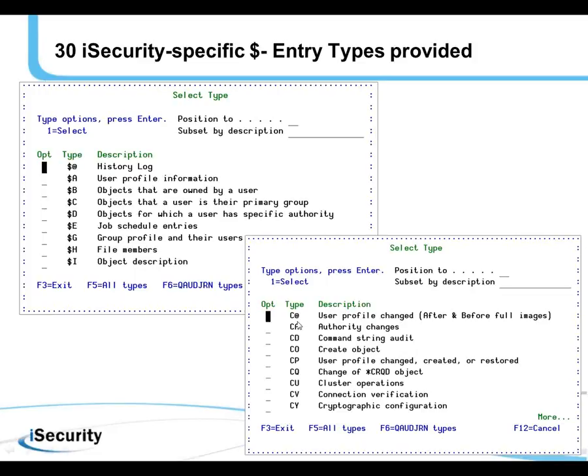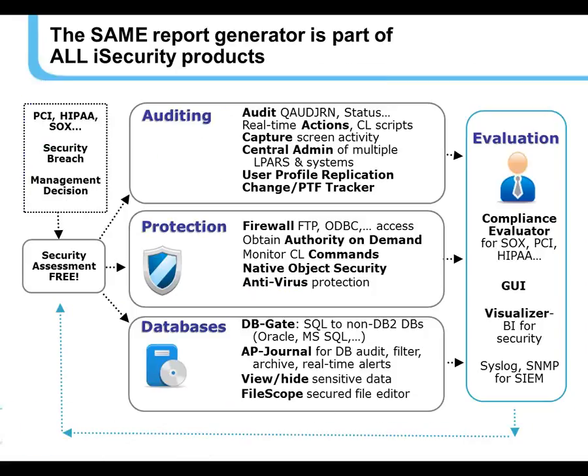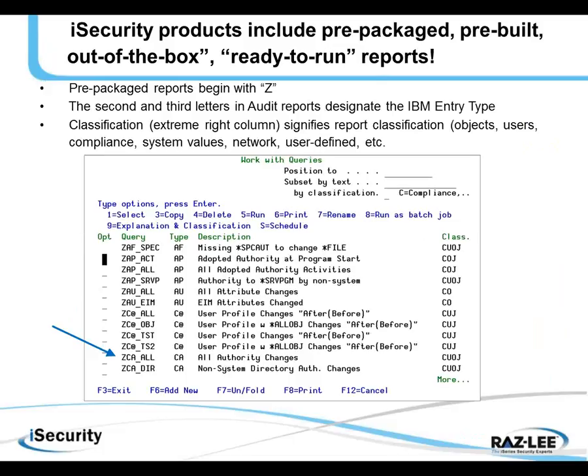C& is an iSecurity entry type which, for example, reports on user profiles which have been changed and provides before and after images. Again, the same report generator is part of all the iSecurity products — you see them here in the middle of the screen. It's very easy to use the report generator, certainly after having learned it in one product. The iSecurity products come with prepackaged reports, which begin with a Z.